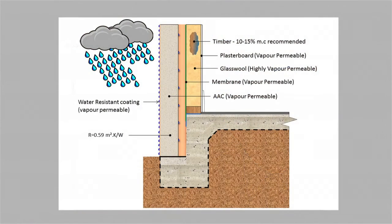Cavities are not always ventilated. Ventilation promotes drying but can also lead to energy inefficiencies through uncontrolled air flows. So if we take a ventilated cavity and turn it into a non-ventilated cavity, we can improve the thermal performance of our construction system. However, we lose our drying potential, so we need to think about how drying will occur without air movement. In that case, we can use the vapour permeance of all construction materials within that make-up to drive water vapour through the construction to outside.